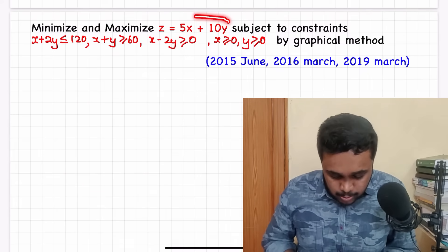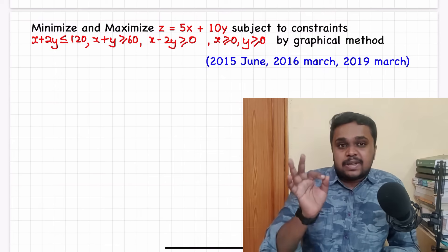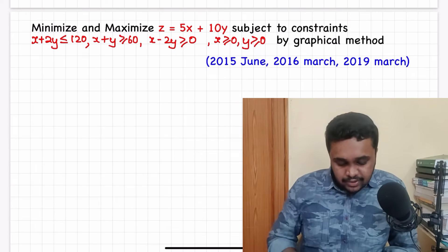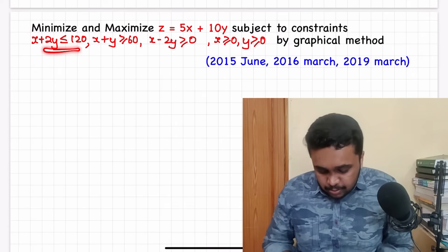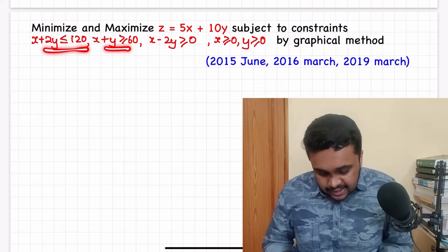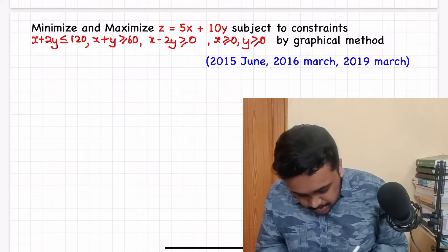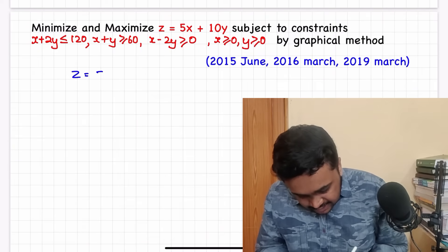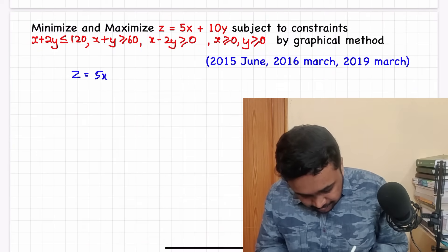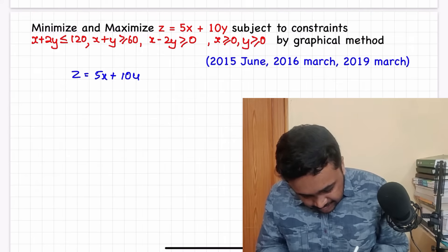We need to minimize and maximize the objective function Z = 5x + 10y, subjected to 3 constraints.